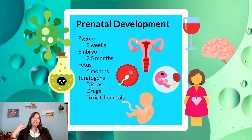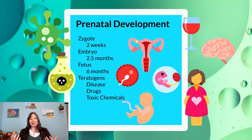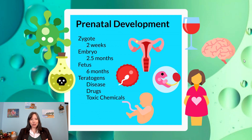The period of the zygote, the period of the embryo, and the period of the fetus. Prenatal development really starts when the egg and sperm meet, and that's called fertilization. When the egg and sperm meet, that's considered to be day one of the period of the zygote.